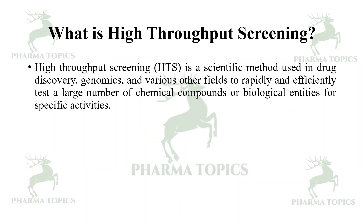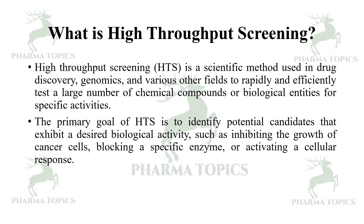High throughput screening is a scientific method used in drug discovery, genomics, and various other fields to rapidly and efficiently test a large number of chemical compounds or biological entities for specific activities. The primary goal of HTS is to identify potential candidates that exhibit a desired biological activity, such as inhibiting the growth of cancer cells, blocking a specific enzyme, or activating a cellular response.